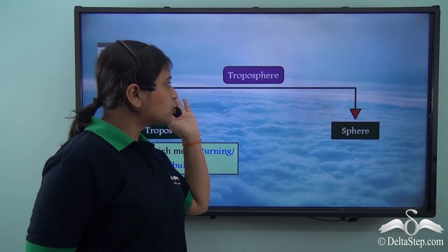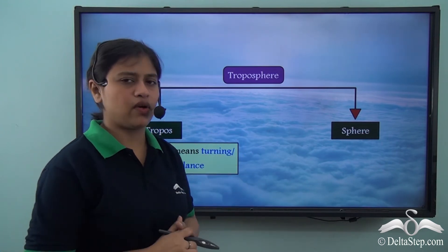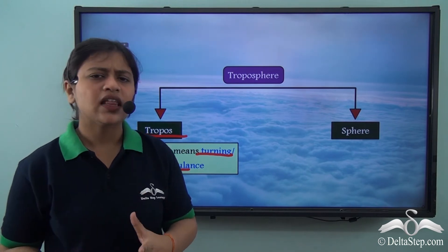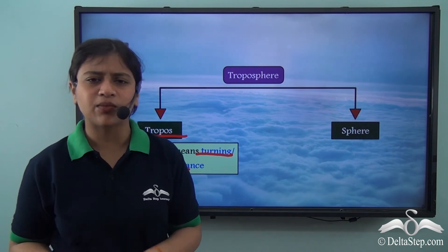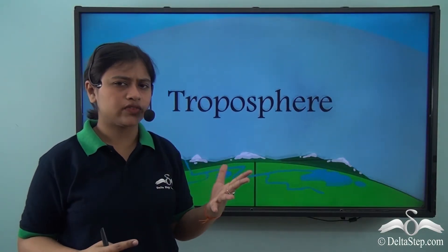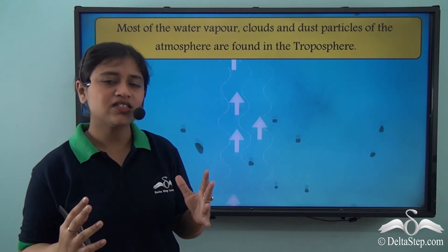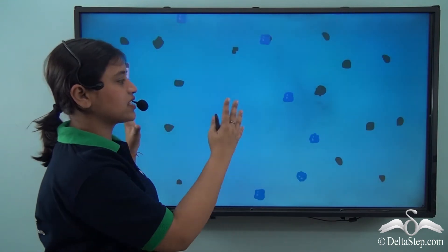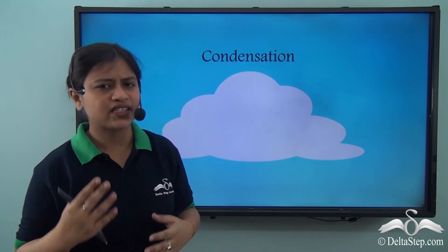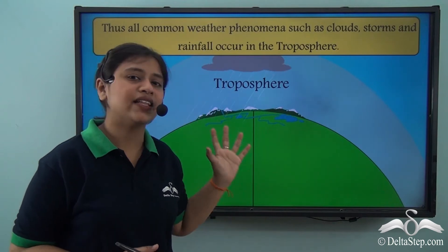The word 'tropos' is a Greek word which means turning, mixing or turbulence. This name is given because of the presence of water vapour and dust particles in this layer. The water vapour goes higher into the atmosphere and condenses on the dust particles to form water droplets, which come together to form clouds — this is condensation. After that, it results in precipitation in the form of rainfall, snow, fog, etc. These weather phenomena take place in this layer of the atmosphere.